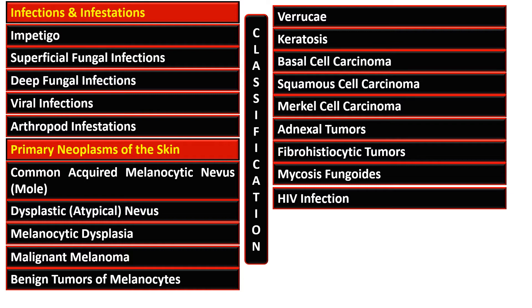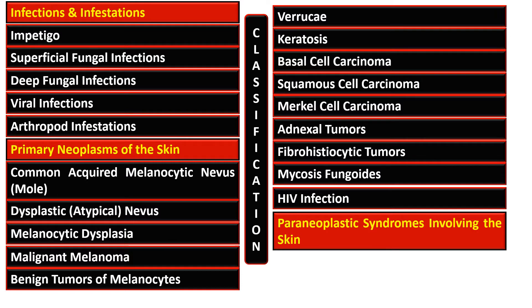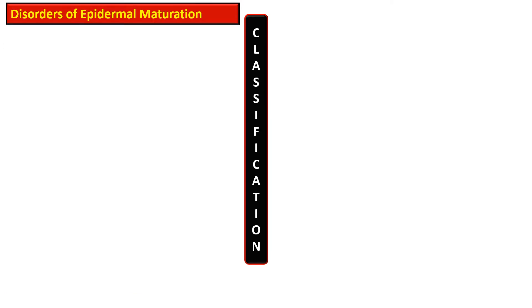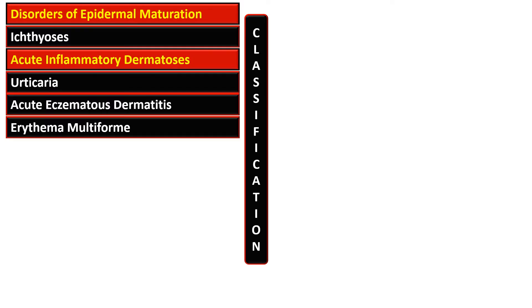There are varieties of adnexal cell tumors that occur in the skin: fibrous/aesthetic tumors, mycosis fungoides, and HIV infection. Then there are some paraneoplastic syndromes that involve the skin. Another way to classify the lesions of the skin is the disorder of epidermal maturation, that is, ichthyosis.